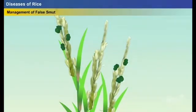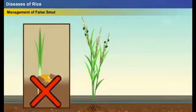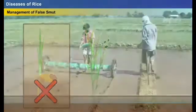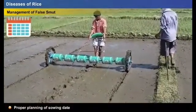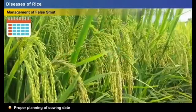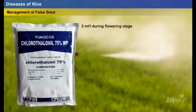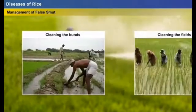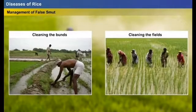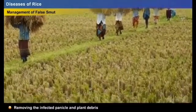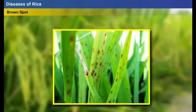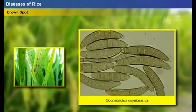False smut can be managed by avoiding sowing of infected seeds; by proper planning of sowing date to avoid damage during the heading period; by spraying chlorothalonil 75 WP at the rate of 2 ml per liter during flowering stage; by cleaning bunds and fields regularly to avoid disease transmission through weeds; and by removing infected panicles and plant debris after harvesting.